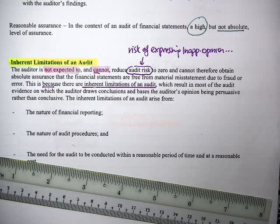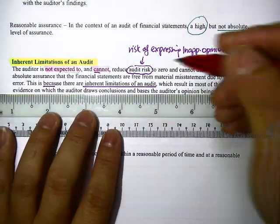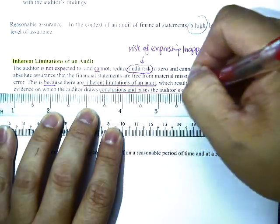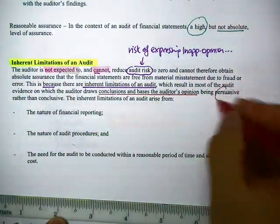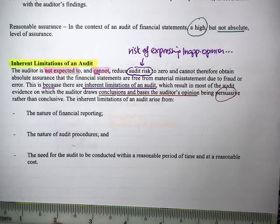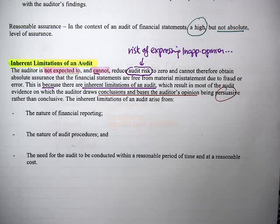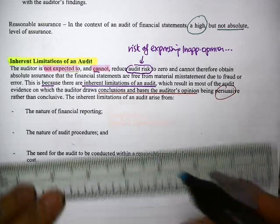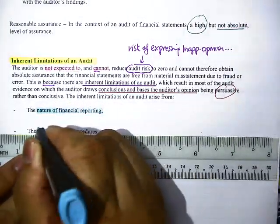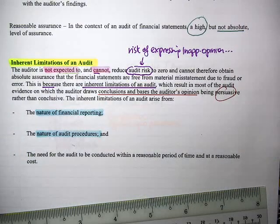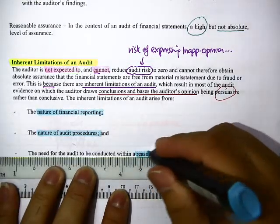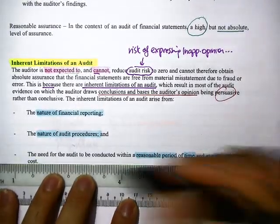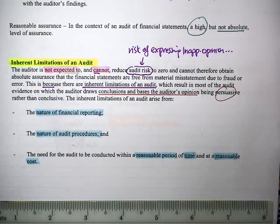The inherent limitation exists because all the conclusions and opinions drawn are persuasive rather than conclusive. They are mainly due to three main headings, which you must remember. When you write the answer in the exam, these three headings should appear: nature of financial reporting, nature of audit procedure, and the need for the audit to be conducted within reasonable periods of time and reasonable costs.